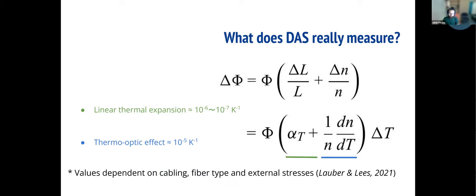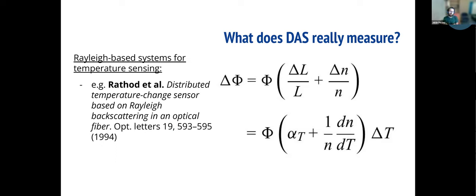However, this may change depending on the cabling type — for example, armoring and coating. This also implies that we already can estimate a very simple transfer function between the temperature changes measured by DAS and the strain that's natively measured. It turns out this idea dates back a couple of decades and was already proposed as a potential method to study temperature using Rayleigh-based systems like this.